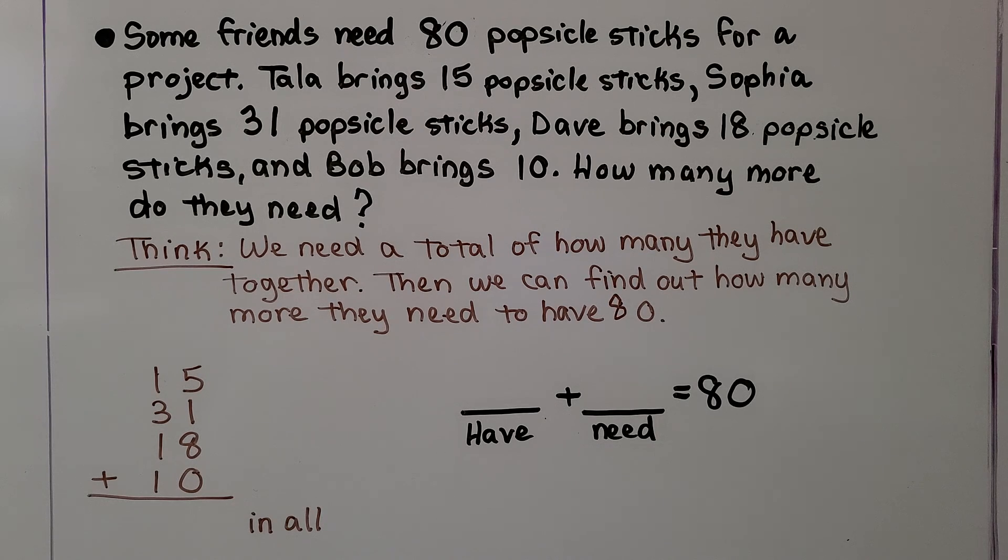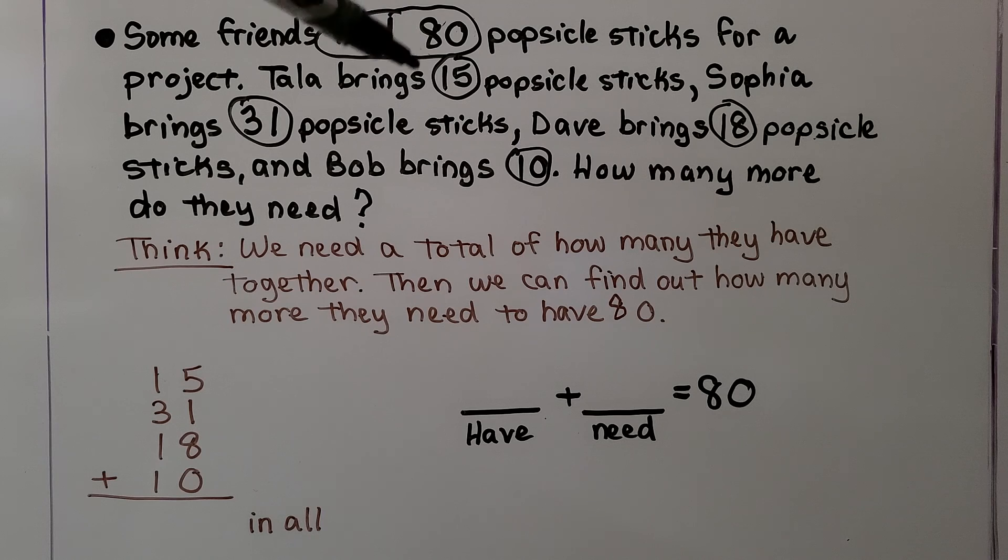It says they need 80 right here. We can circle the important information. They need 80. Tala brings 15. Dave brings 18. Sophia is 31. Bob's 10.